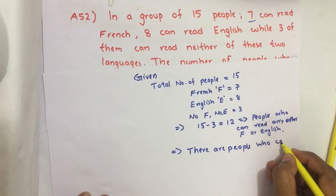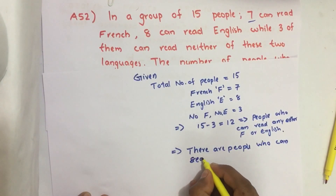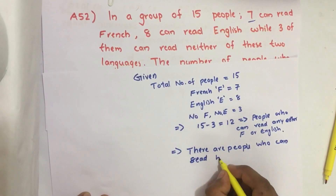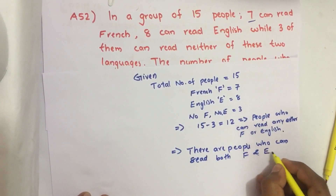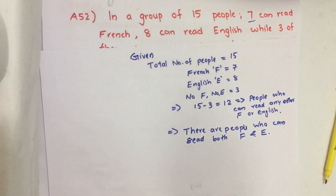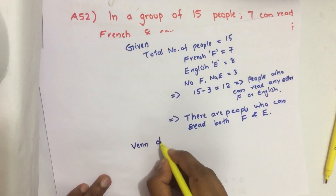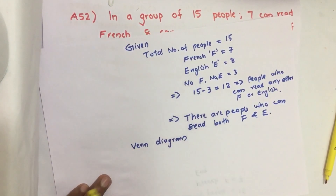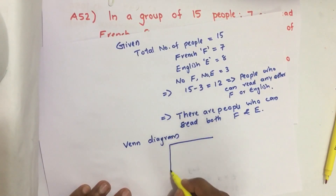We need to find the number of people who can read both French and English. For such questions, we can solve using a Venn diagram. So let us draw a Venn diagram here.